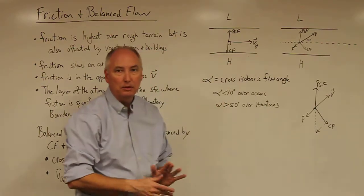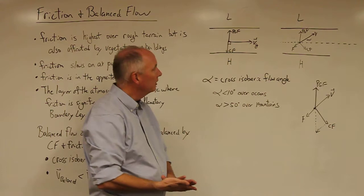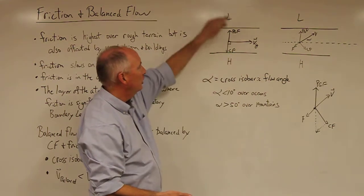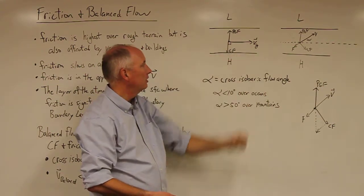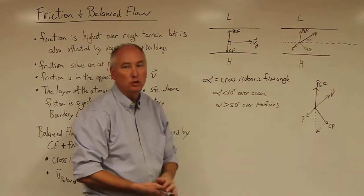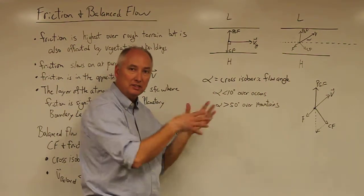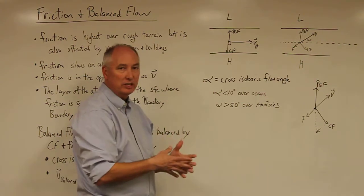So here we have an example of the force balance diagram for the geostrophic wind. Here we have high to low. Pressure gradient is pointing directly from high to low. The velocity vector is parallel to the isobars and the Coriolis force is acting to the right of the motion, which means that this picture is delineating a situation in the northern hemisphere.